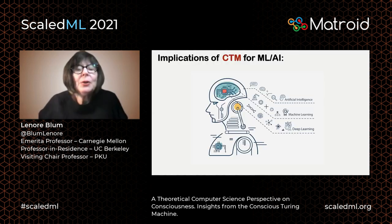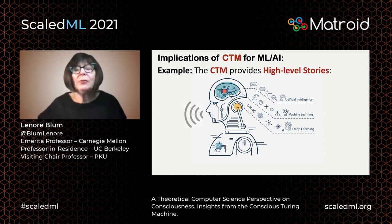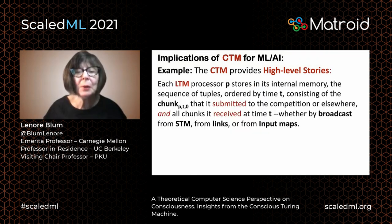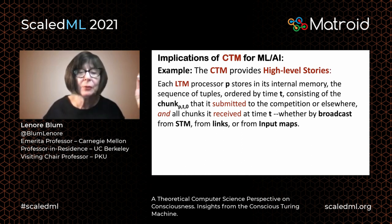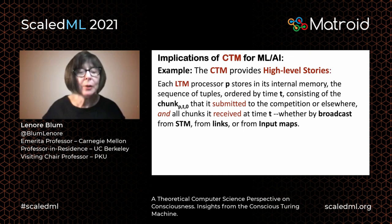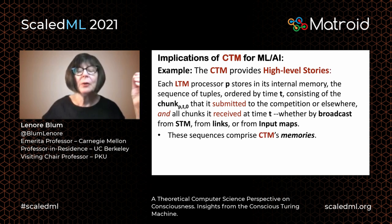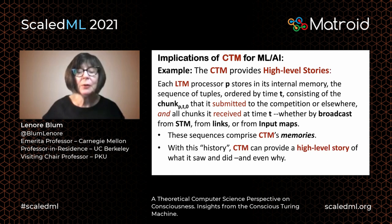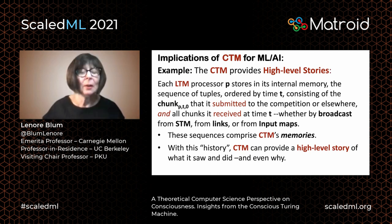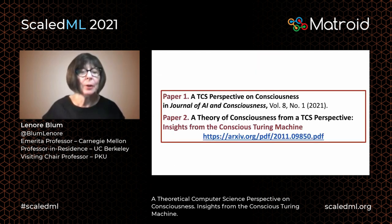What might be the implications of the CTM for machine learning and AI? The CTM provides high-level stories. Each long-term memory processor P stores in its internal memory the sequence of tuples ordered by time t, consisting of the chunk submitted to the competition and all chunks it received at time t — whether by broadcast from STM, from links, or from input maps. These sequences comprise the CTM's memories, and with this history the CTM can provide a high-level story of what it saw and did and even why. We have a couple of papers out: one in the Journal of AI and Consciousness, and one currently in the archive.